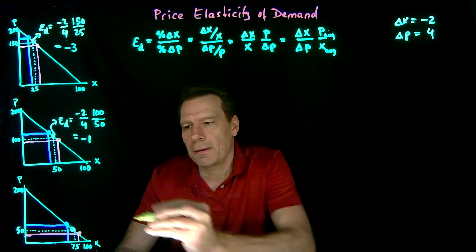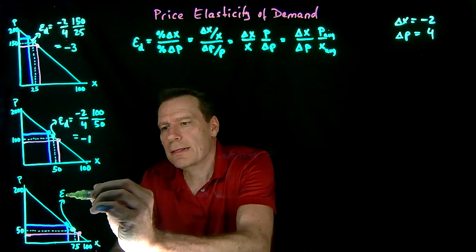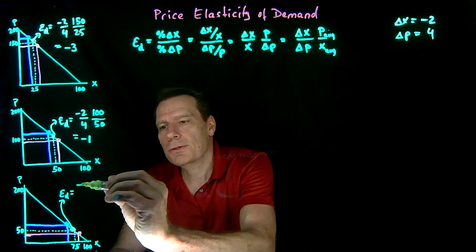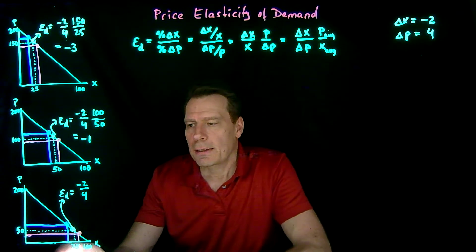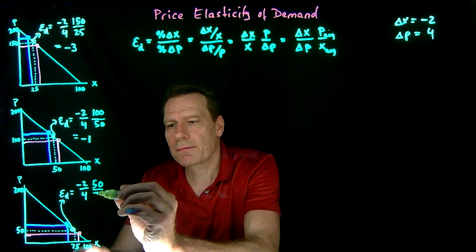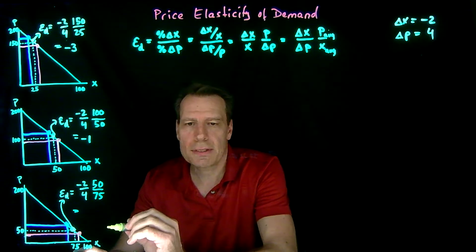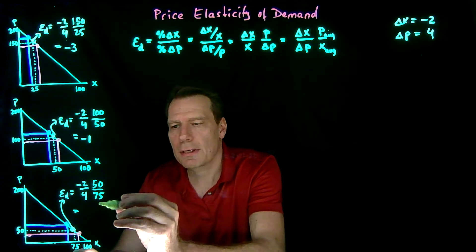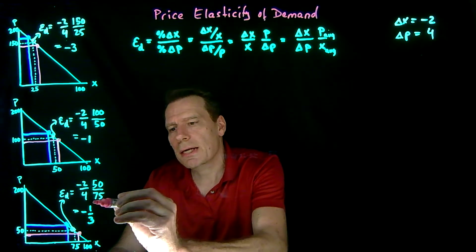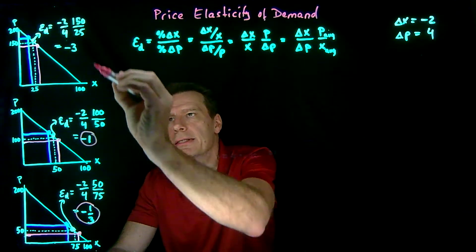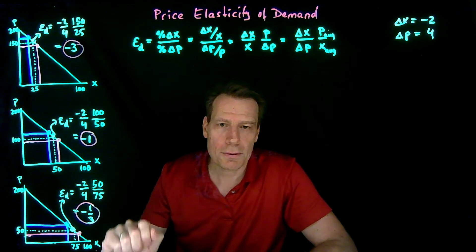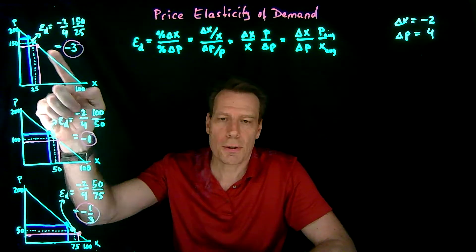Down here for this third point, the elasticity of demand is again going to have the same first term, minus 2 over 4, times 50 — the price — divided by 75. So 2 times 50 is 100, and 4 times 75 is 300, giving us minus 1 third. So we're getting three different values for the price elasticity of demand — despite having the same demand curve — when we pick different points on it.